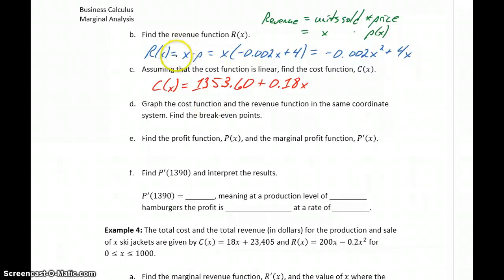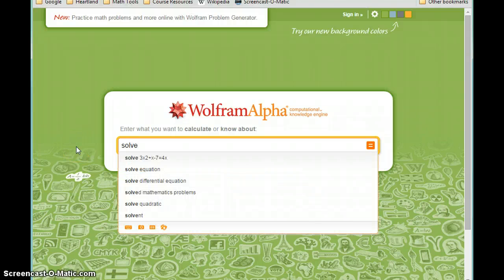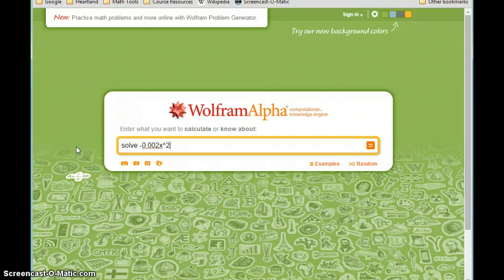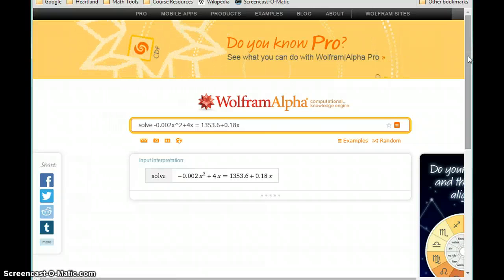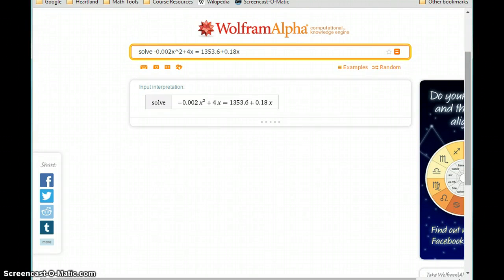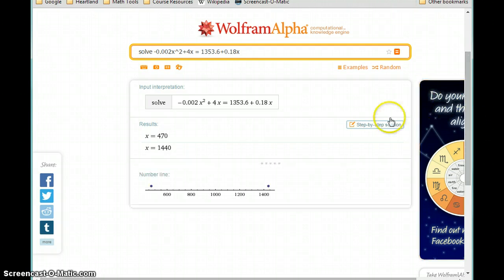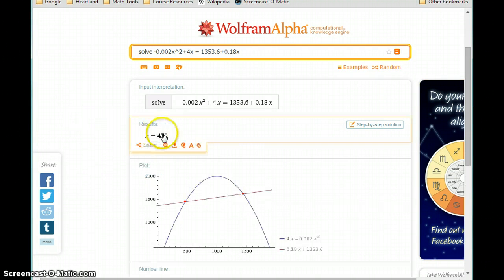So now what we're going to do is graph both the cost function and the revenue function on the same coordinate plane and find the break-even points. In order to do that, we're going to graph both of these functions, and then we're going to solve our revenue function set equal to our cost function. We can actually do this in one step using Wolfram Alpha by typing solve negative 0.002X squared plus 4X, so our revenue function, equal to our cost function. So what we want to do is solve this equation where our revenue function is set equal to our cost function.